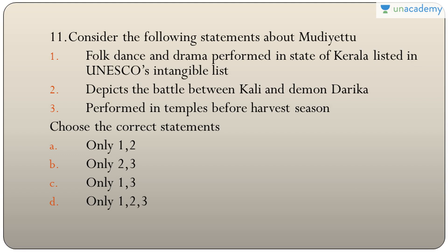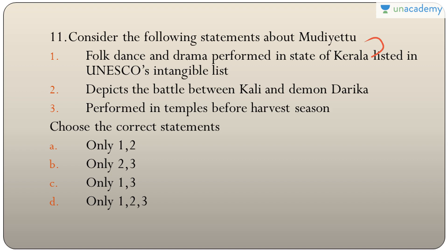Question eleven: statements about Mudiyattu — it is a folk dance and drama of Kerala, listed in UNESCO's intangible list, depicts the battle between Kali and the demon Darika, and is performed in temples before the harvest season. The first two are true, but it is performed after the harvest season, not before. The answer is A — only one and two.